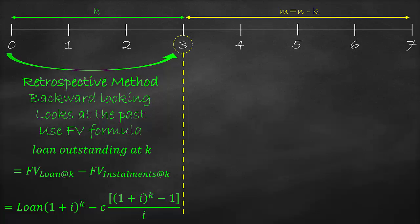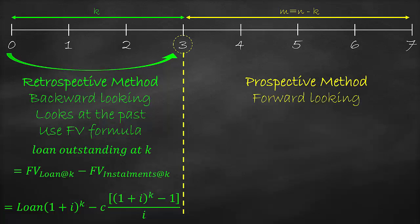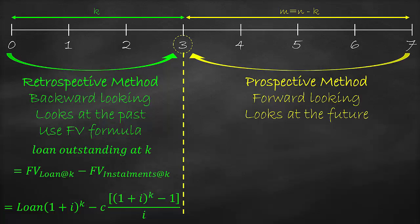The second method is the prospective method, which is a forward looking approach. This means that we check the number of unpaid installments. Then we need to bring the future unpaid installments to the year of analysis in which we want to calculate the loan outstanding, which is year 3 in our example. Therefore, we use the present value formula.